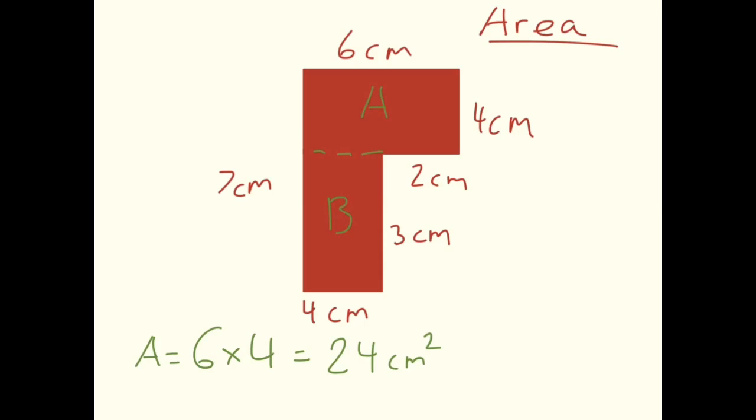Let's write out the equation. B is 4 centimeters multiplied by 3, which gives us 12 centimeters squared.